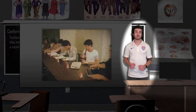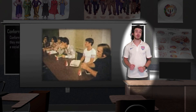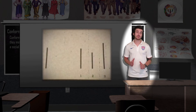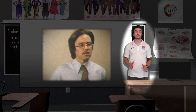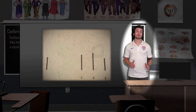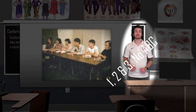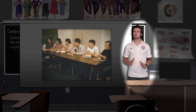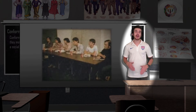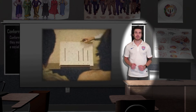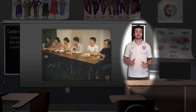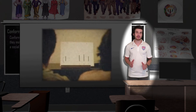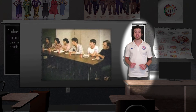Asch would have a group of eight college students participate in a simple perceptual task. In reality, all but one of these participants were actors who were involved in the experiment. The actors knew the true aim of the experiment but were introduced to the subject as other participants. Each student was shown a card with a line on it, followed by another card with three lines labeled A, B, and C. One of the lines on the second card was identical in length to the line on the first card, while the other two lines were clearly longer or shorter.